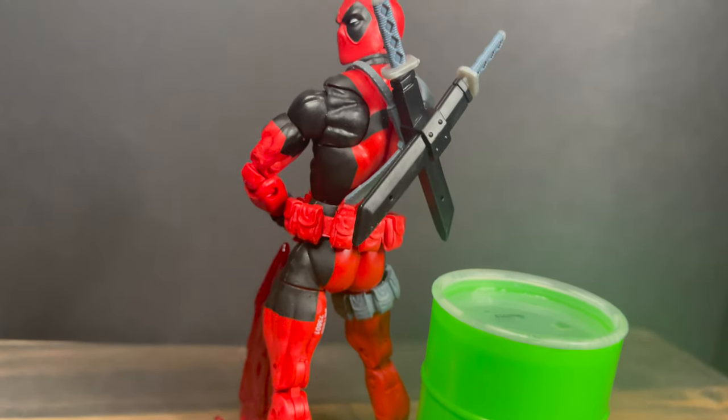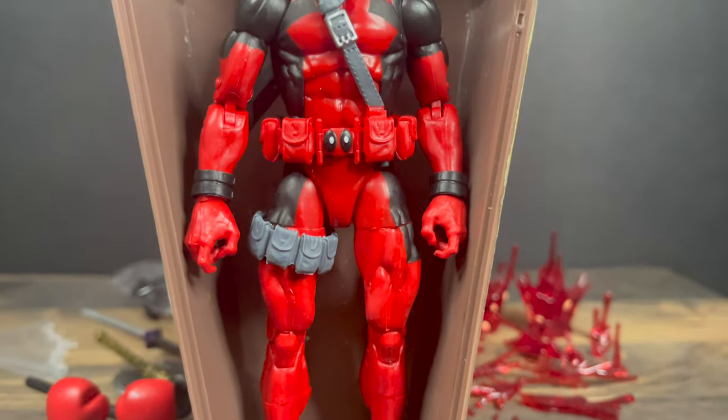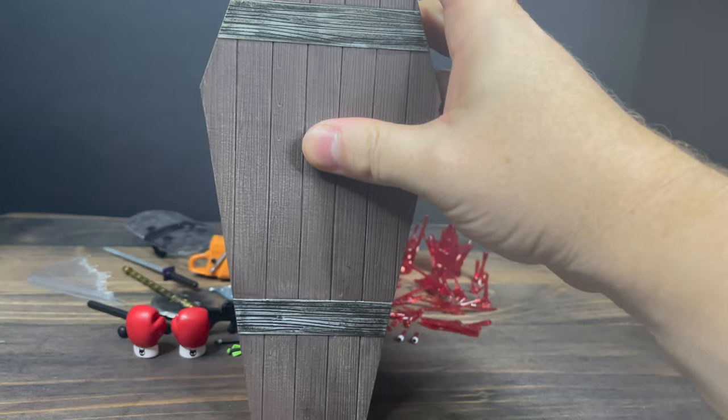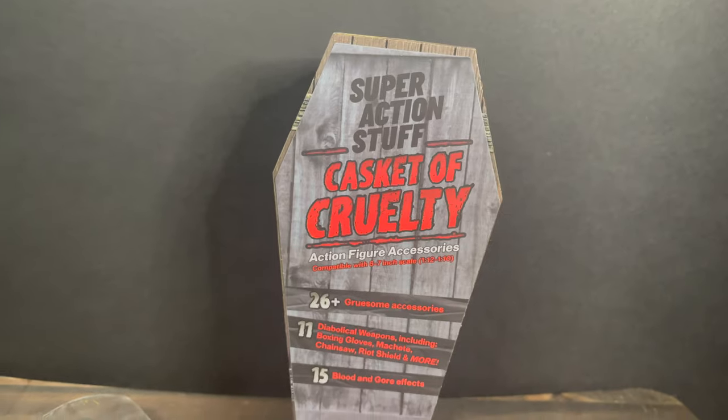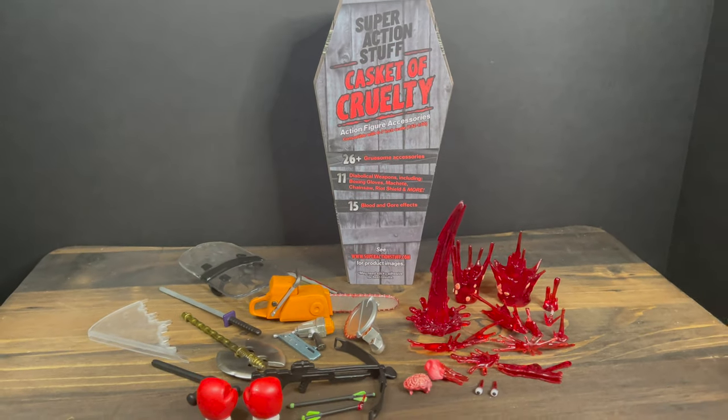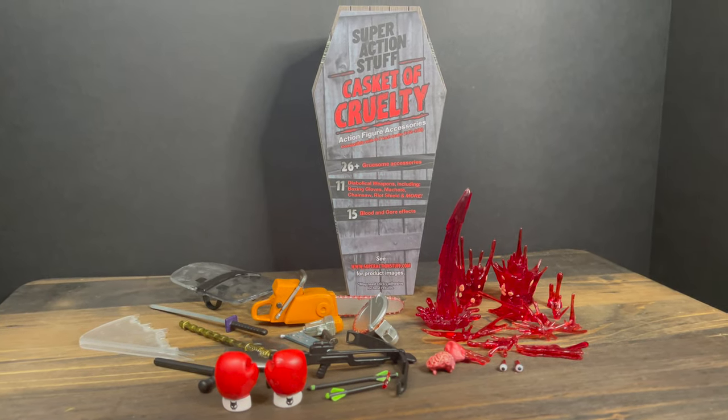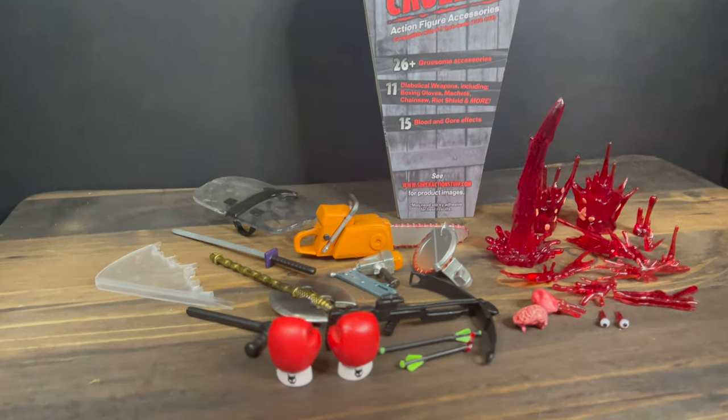Whatever you want to do. And again, like I said, the best part - six inch to around seven inches depending, yeah, you can use the casket for your figure, which is totally solid. So that will wrap it up for my look at the brand new Casket of Cruelty by Super Action Stuff. Thank you to Super Action Stuff for providing this press sample to give you guys this early look.